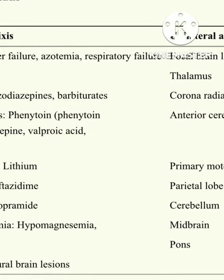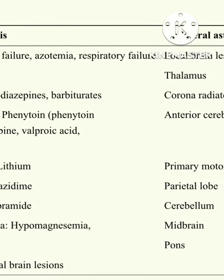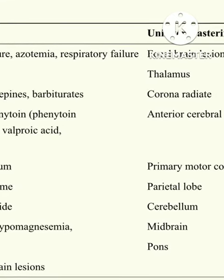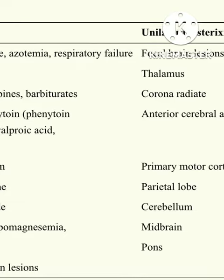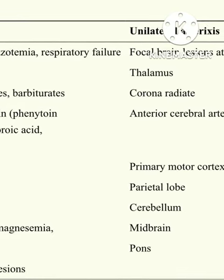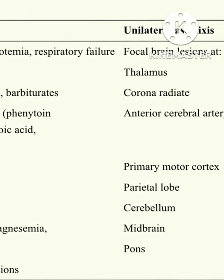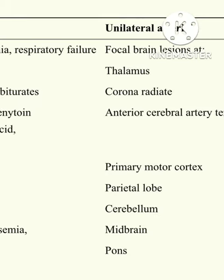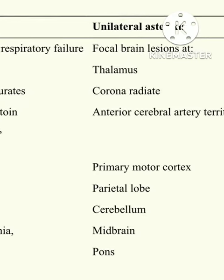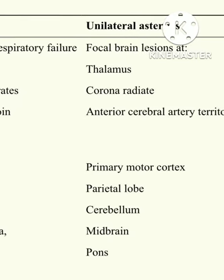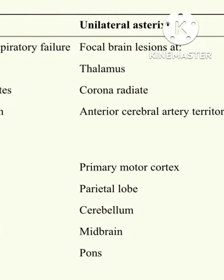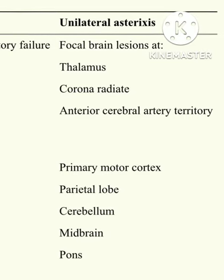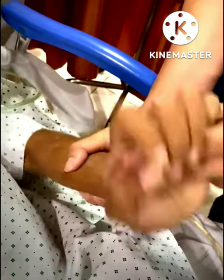Unilateral asterixis can be caused by focal brain lesions, such as lesions in the thalamus, corona radiata, cerebellum, or midbrain. Those were the bilateral and unilateral causes of asterixis.